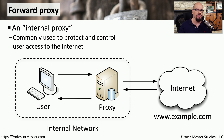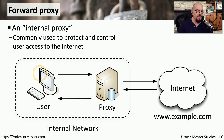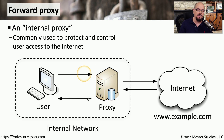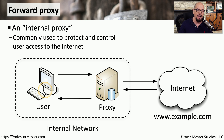If you have a proxy in your environment that is used to control the user's access to the internet, then you're probably using a forward proxy — sometimes referred to as an internal proxy. Your users would make a request to the proxy to gain access to a web server on the internet. The proxy might examine the URL and make sure you're not visiting a known malicious site, and if you are, it can block that communication. There might also be a series of categories associated with these URLs to control exactly what type of content a user might be visiting. If all of that passes the check, the proxy will perform the request for the user, receive the answer from the internet, evaluate that information to make sure it's safe, and then send the user a copy of that response.